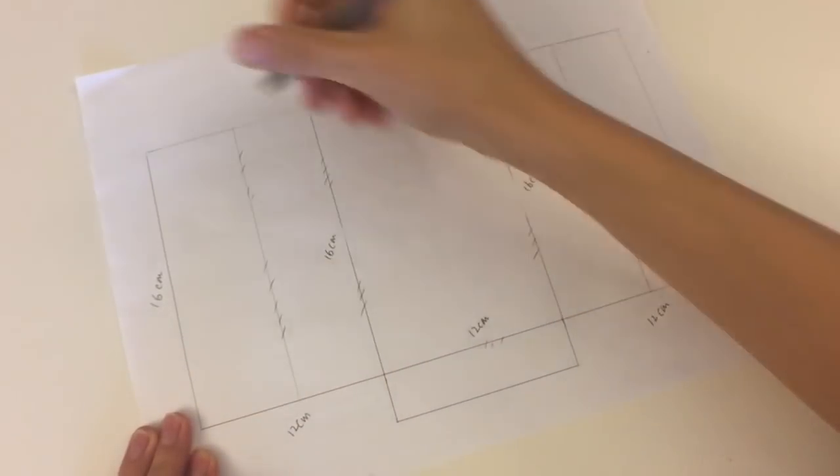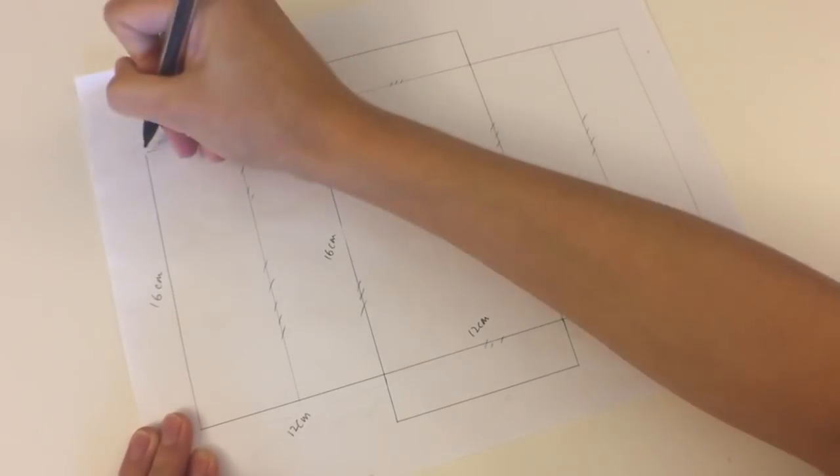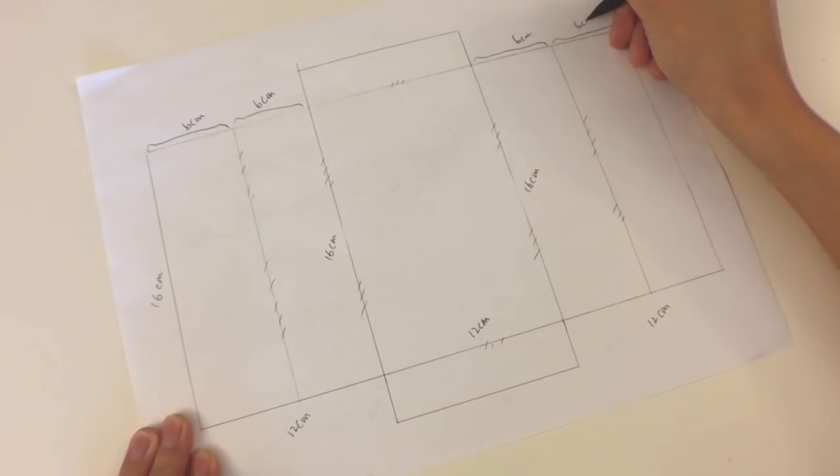And then, of course, half of 12 centimeters is 6 centimeters. You don't need to cut these off. Those are just for folding references, and then same thing for the other side as well.